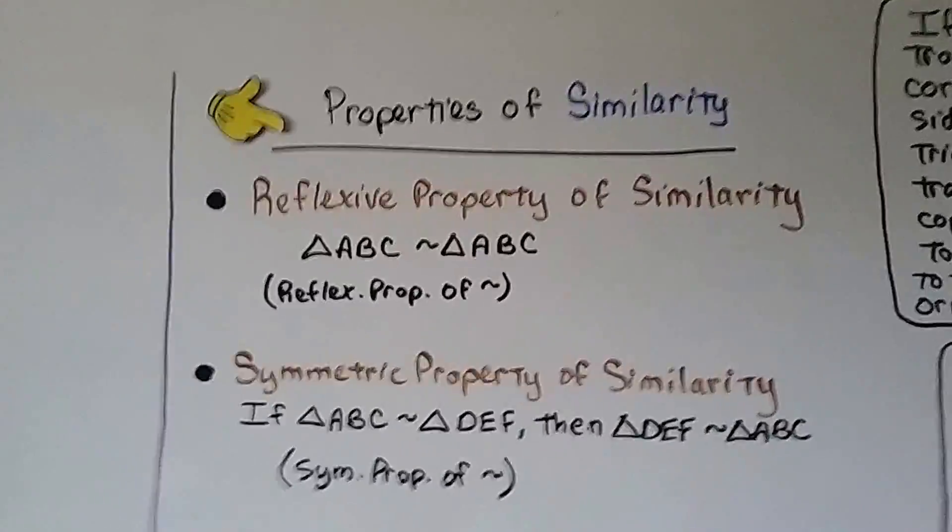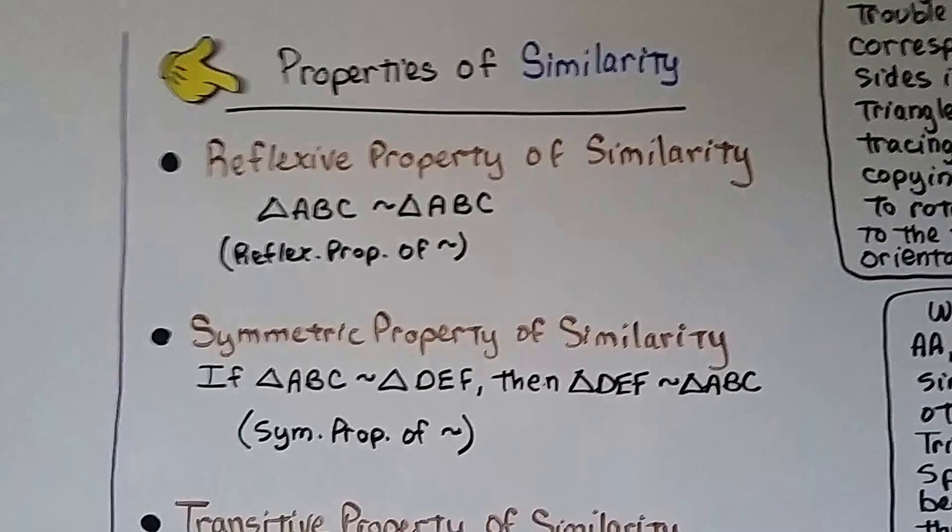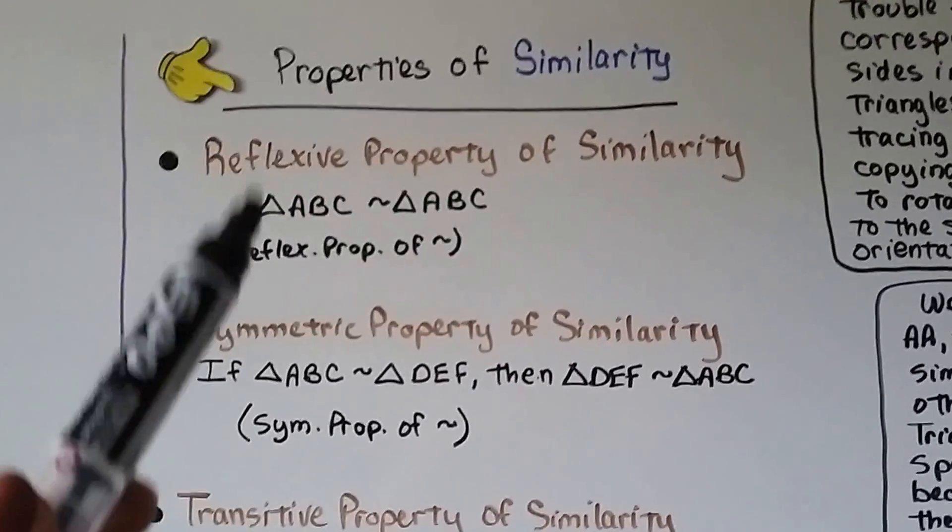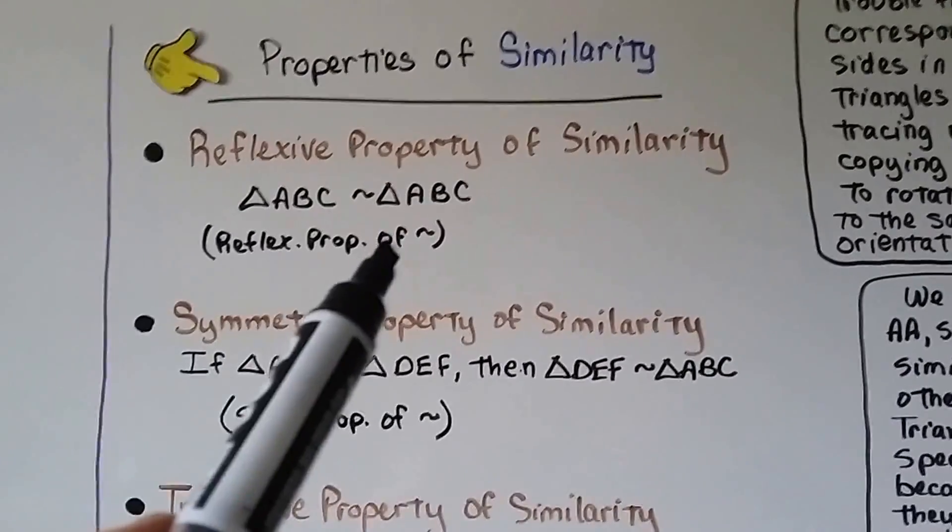Here's the properties of similarity. The reflexive property of similarity is triangle ABC is similar to triangle ABC. It's reflexive. We can write in geometric notation that reflexive property of similarity.